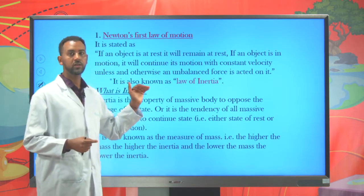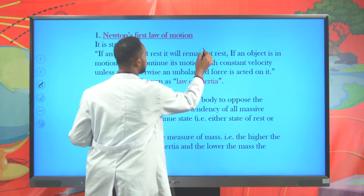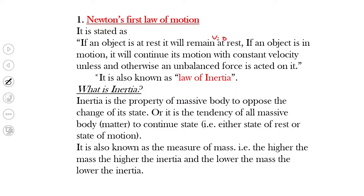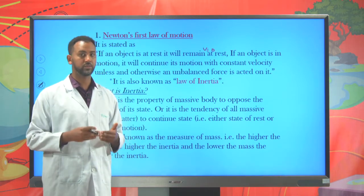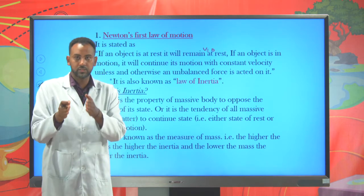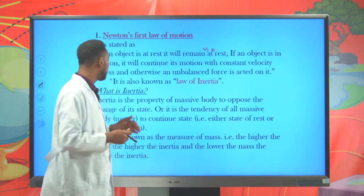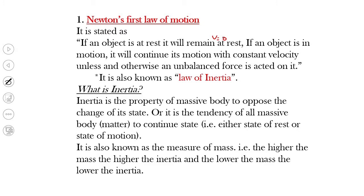This law tells us that force is responsible for the change of state of objects. If an object remains at rest — meaning its velocity is zero — it will remain zero unless an unbalanced force acts on it. If an object is in a state of motion, it will continue its motion. A change of state appears only if force is exerted. An object in motion can be converted to rest if there is a force, and an object at rest requires a force to begin moving.